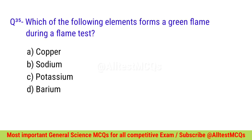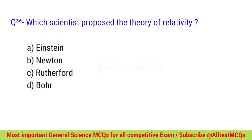Question number thirty-five: Which of the following elements forms a green flame during a flame test? Correct option is D — Barium. Question number thirty-six: Which scientist proposed the theory of relativity? Correct option is A — Einstein.